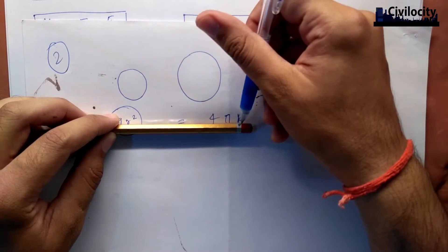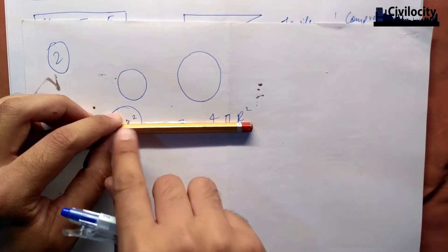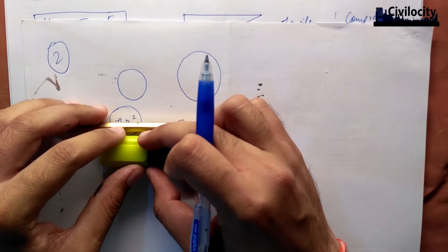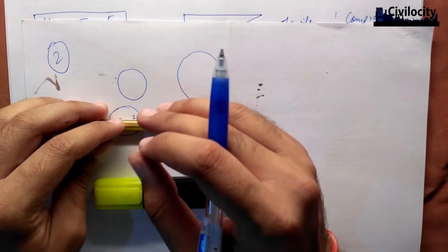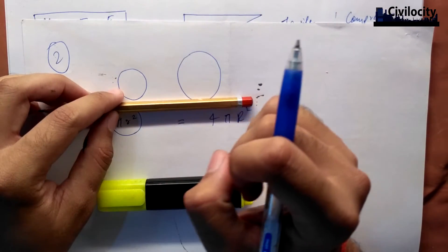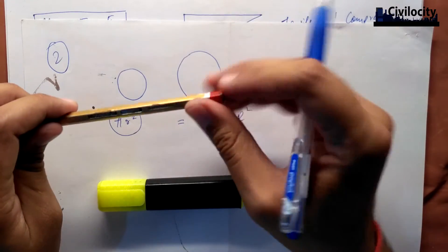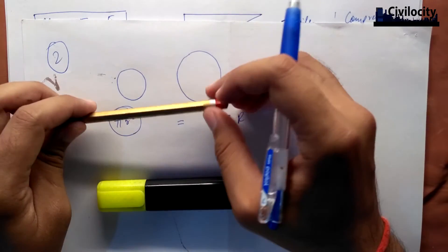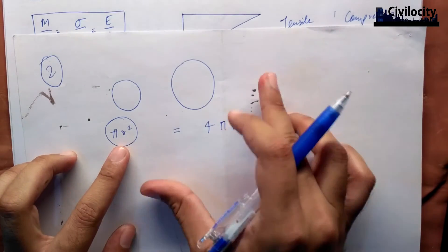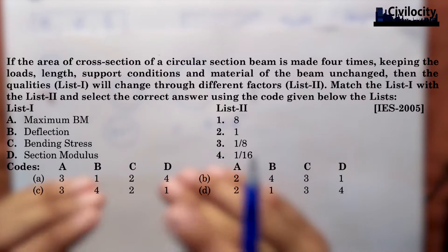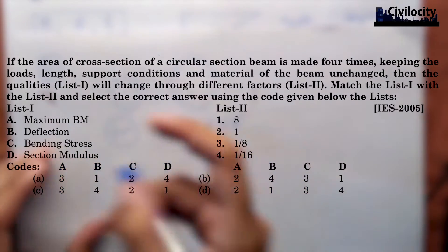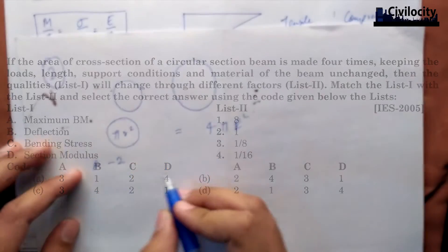If I apply a load of 10 kN on a beam, the bending moment will be enough to create that moment from the 10 kN load. Even if I change the cross-section, the bending moment remains the same — it does not change. Therefore, the maximum bending moment remains unchanged, and the option will be 2.